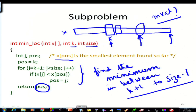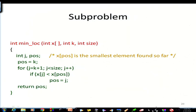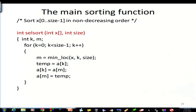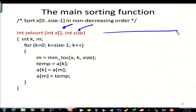So the full algorithm uses the function 'min_loc' which returns the minimum location — the location of the smallest element. The selection sort main sorting function takes the array and the size as parameters: array x and size.